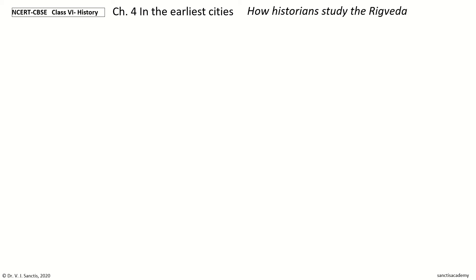Hi, welcome to NCERT CBSE Class 6 History Chapter 4: In the Earliest Cities. In this video we will learn every point in the section 'How Historians Study the Rig Veda,' which contains 6 points.